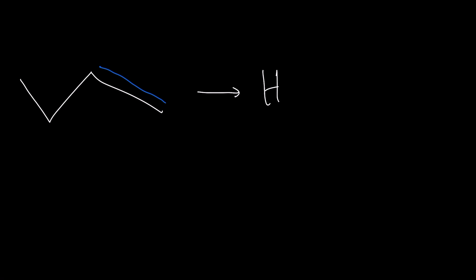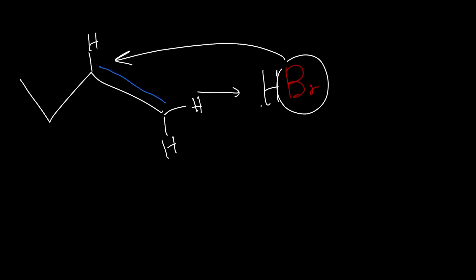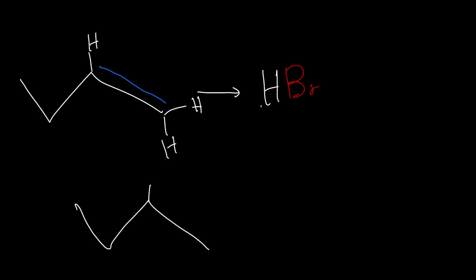Let's talk about this last problem we're going to go over today. What's going to be the major product of this reaction? Because the carbon on the left has one hydrogen and the carbon on the right has two hydrogens, the hydrogen is going to go on the right carbon, which means the bromine would go on the left carbon. So this is going to be your major product. If you want to draw the minor product, you can label the major product on the bottom and the minor product in the middle of the other structure.